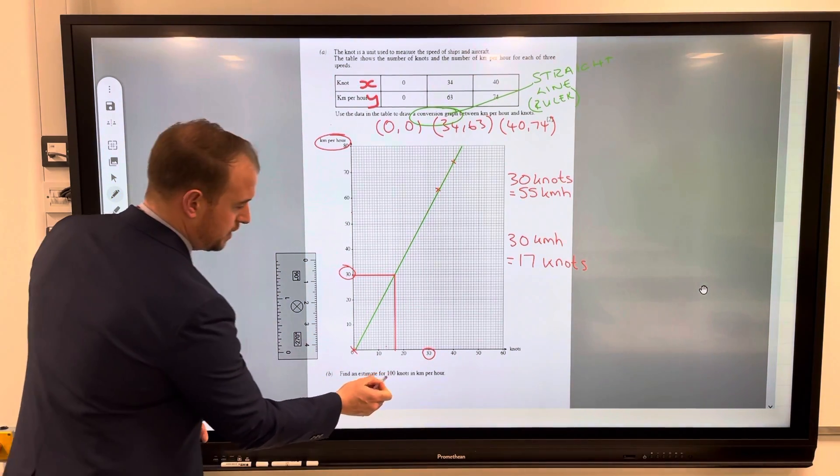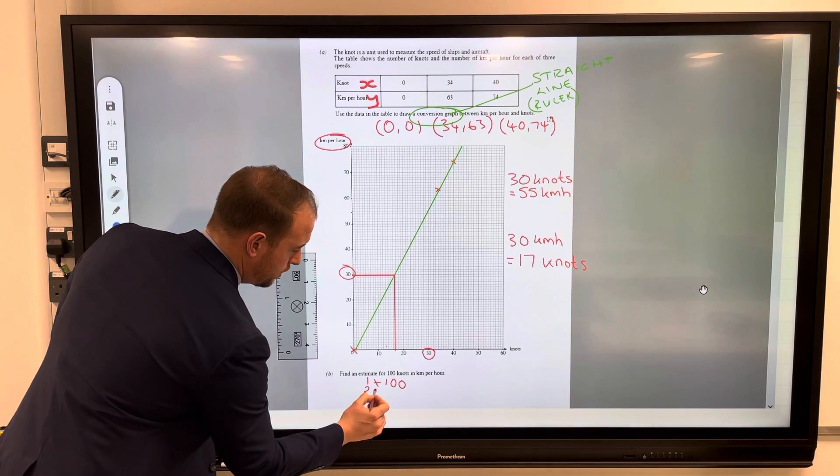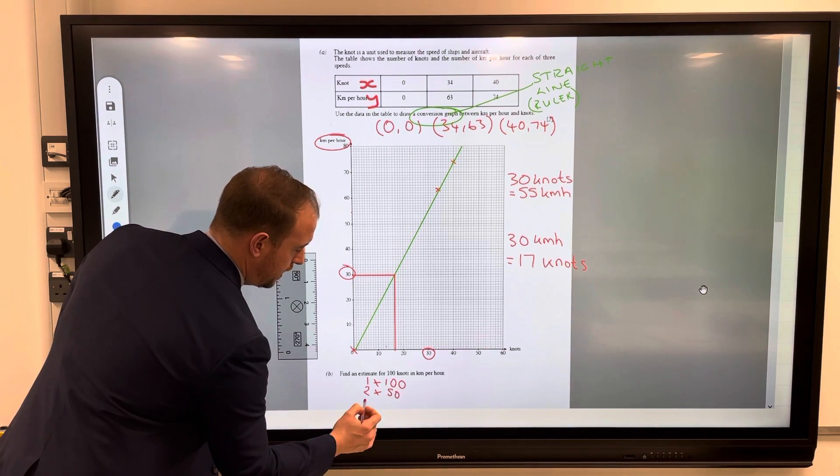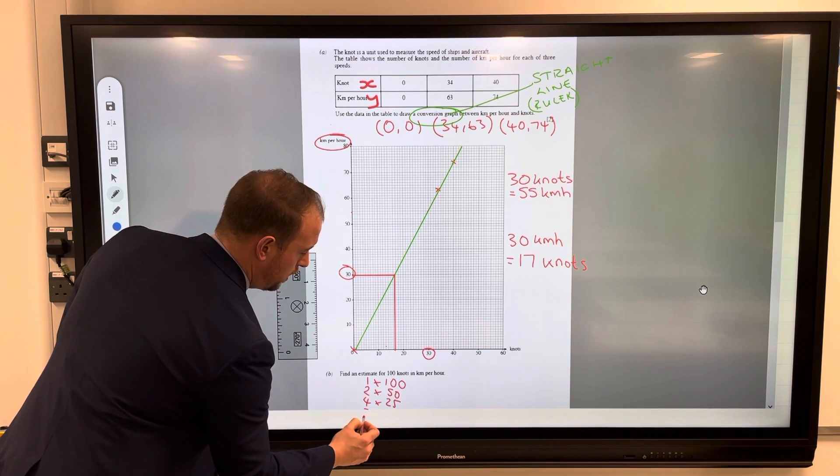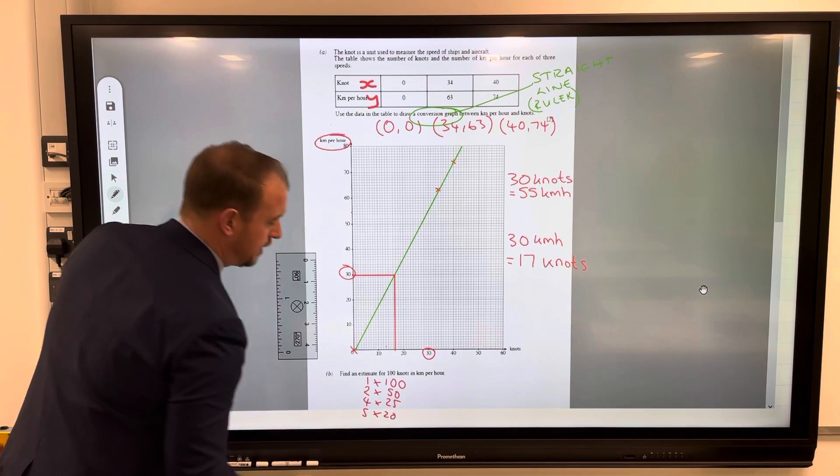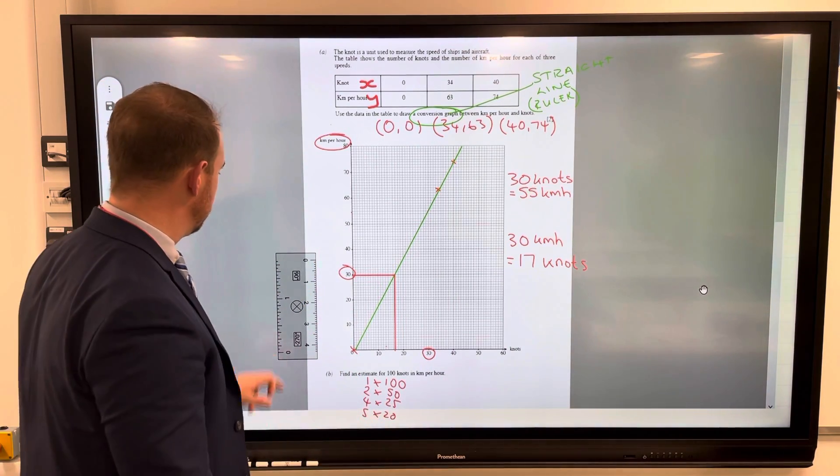So I'm using my factors knowledge. So we could have one times 100, two lots of 50, you could have four lots of 25, or five lots of 20. You could pick either of them. I'm going to go for five lots of 20.